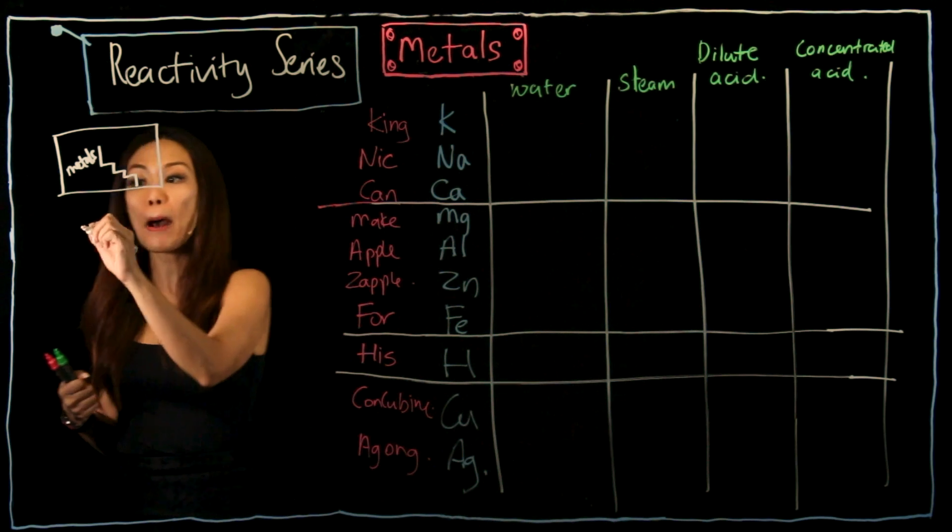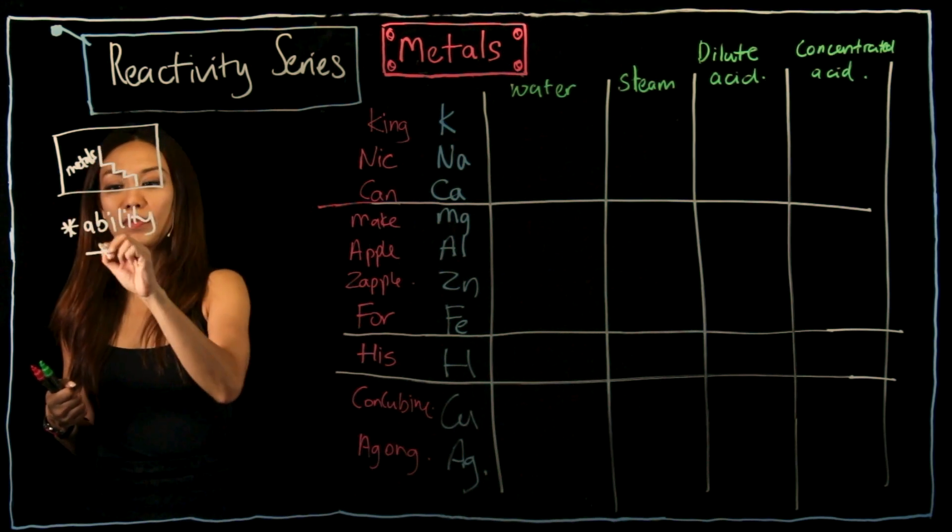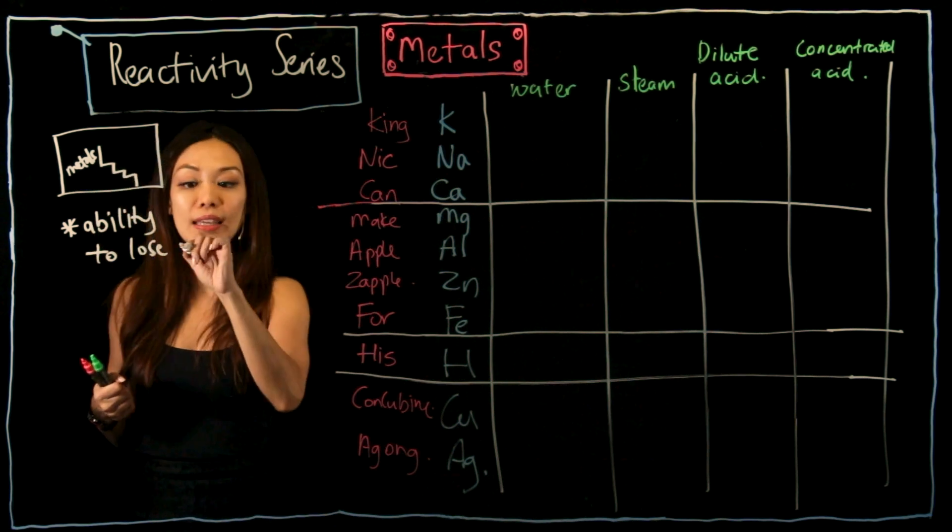For metals, what makes metal metal? Their ability to lose electrons.